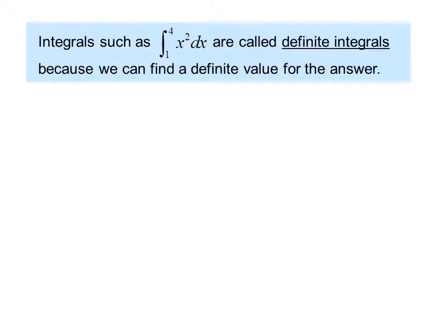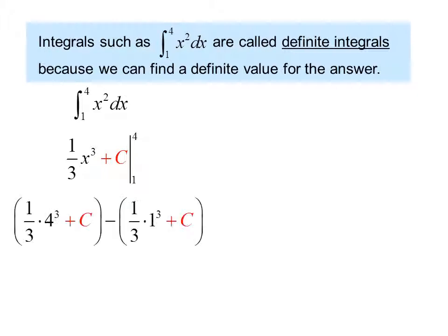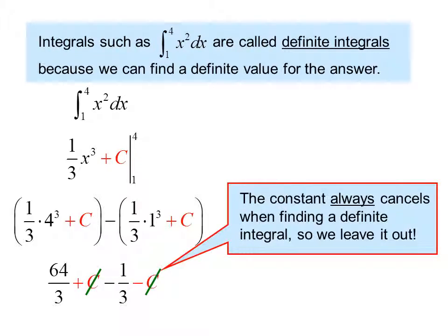Integrals such as the integral from 1 to 4 of x squared dx are called definite integrals because we can find a definite value for the answer. The integral from 1 to 4 of x squared dx is 1 third x cubed plus c evaluated from 1 to 4, or 1 third times 4 cubed plus c minus 1 third times 1 cubed plus c, or 64 thirds plus c minus 1 third minus c. And the c's cancel out. In fact, the constant always cancels out when finding a definite integral, so we leave it out. We do not normally show the plus c in this step.